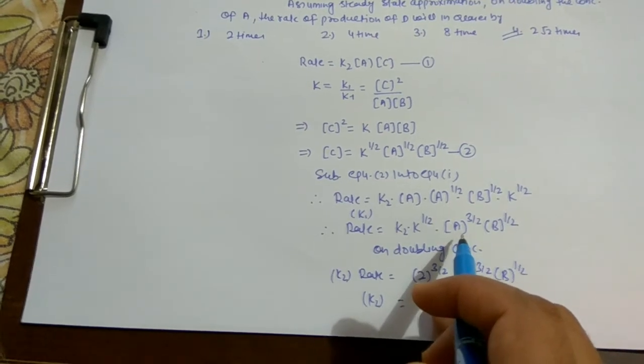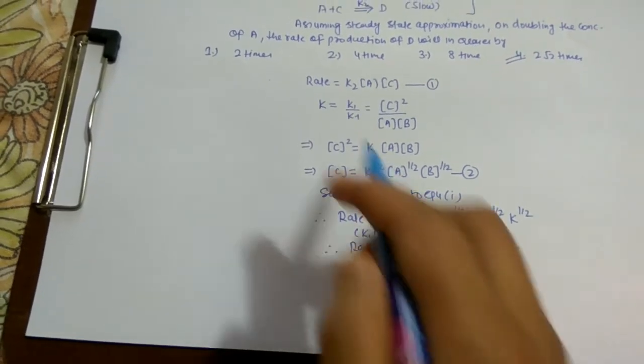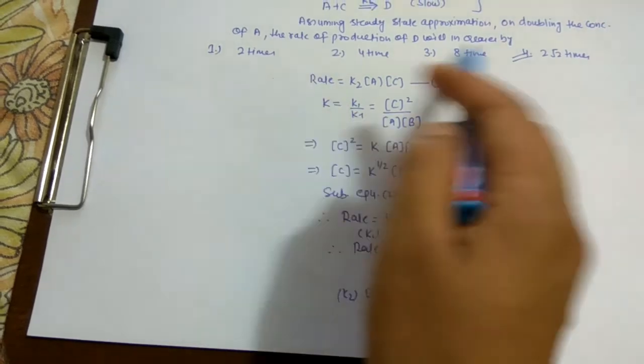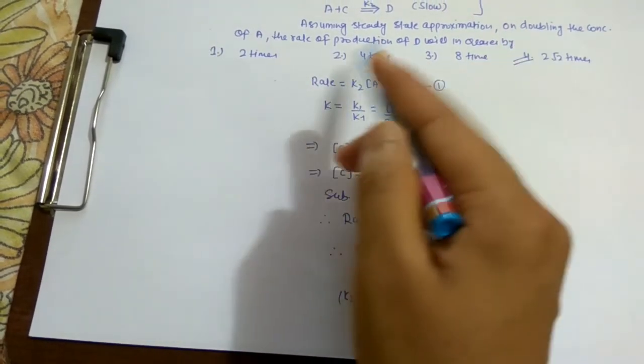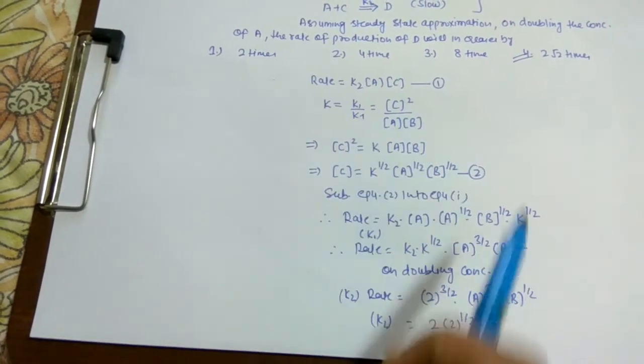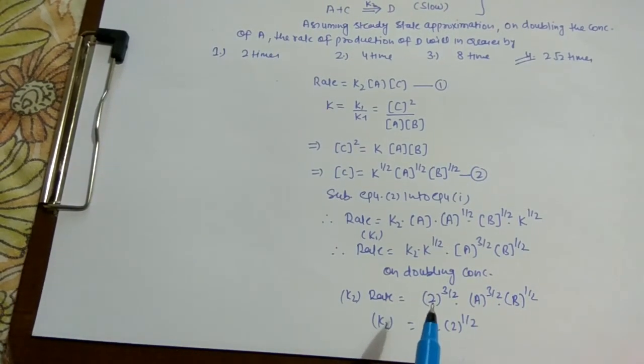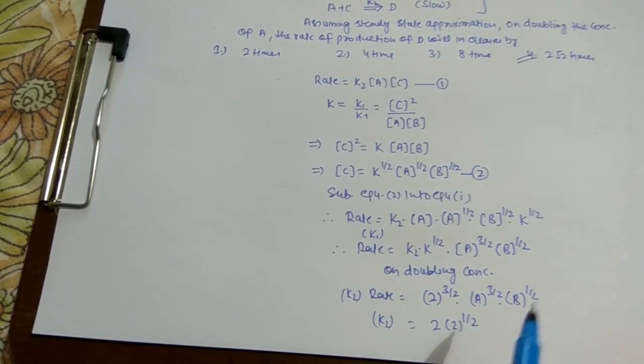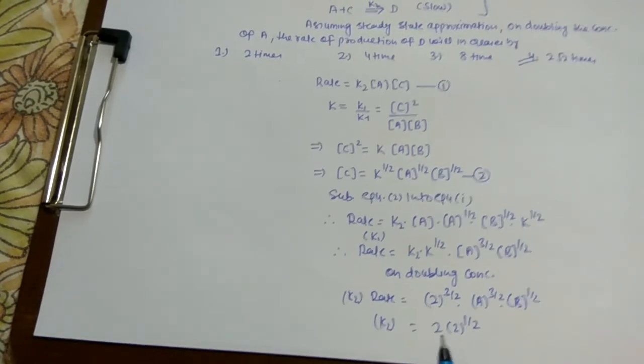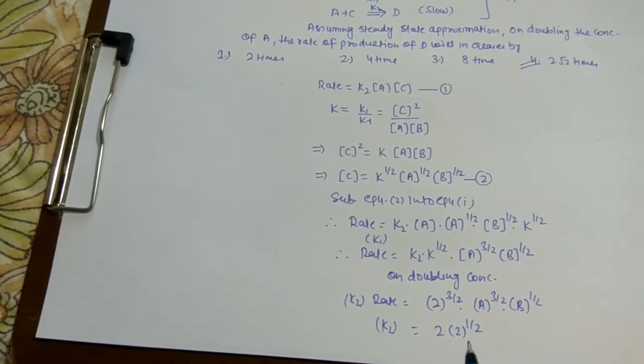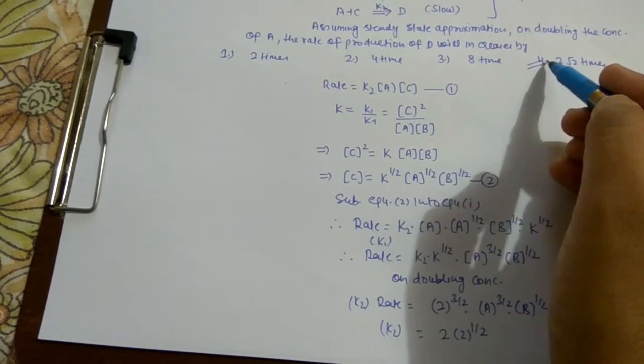Now in the given condition it is given that on doubling the concentration of A, so when we substitute [A] = 2[A], it will become 2^(3/2) [A]^(3/2) [B]^(1/2). So 2^(3/2) equals 2 × 2^(1/2), so correct option is option number 4.